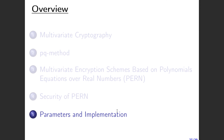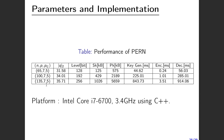Finally, we show three parameter sets corresponding to different security levels, along with public key size, private key size, and average timings for key generation, encryption, and decryption. Encryption and decryption are fast for all parameters. The main drawback is the large public key size, which is typical for multivariate cryptosystems compared to lattice-based schemes. Specifically, our public key size is about two to three times larger than Rainbow's. Other values look reasonable. Thank you very much.